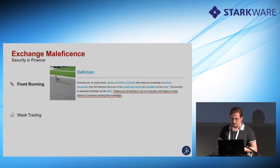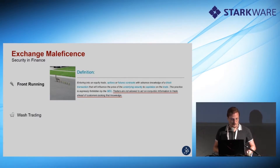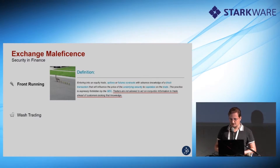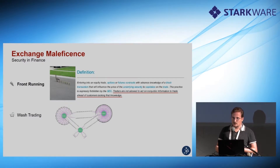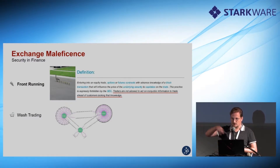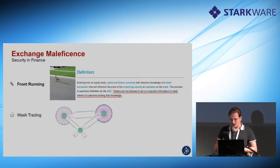This spans across insider trading to trading ahead of customers lacking that knowledge — so it should be public knowledge. Some might argue that if you do front running on a blockchain, these transactions are broadcast so everyone knows about them — it's transparent. Another maleficence is wash trading, where you can create beautiful patterns. We analyzed some on-chain exchanges and found some addresses are trading with themselves, creating beautiful flowers. The talk will be mostly about front running, just to give some examples that there are many other security issues in exchanges, particularly in blockchain-based exchanges.